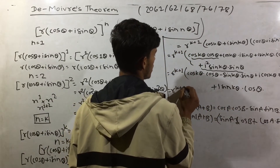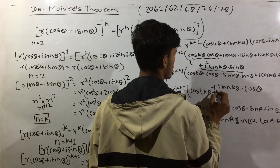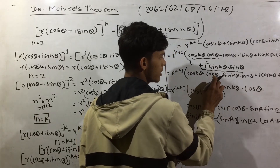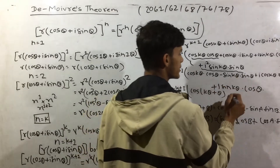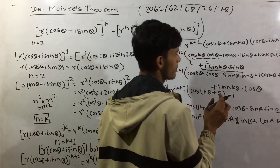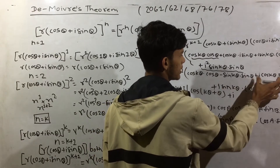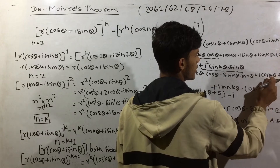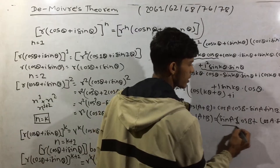Applying the formula: cos(a plus b) equals cos a into cos b minus sin a into sin b. And sin(a plus b) equals sin a into cos b plus cos a into sin b. This completes the step in the proof.